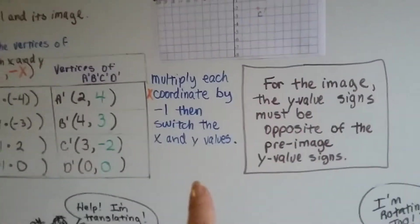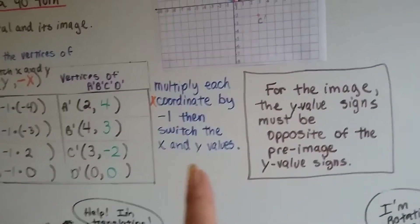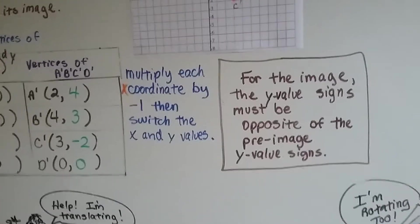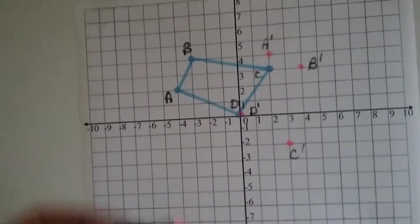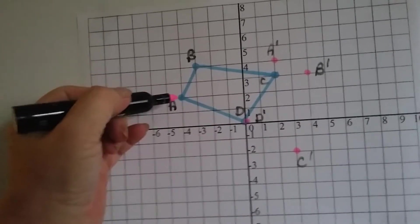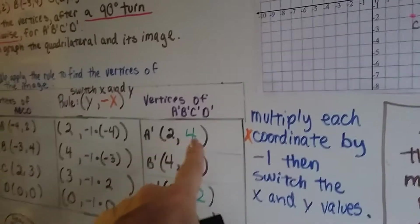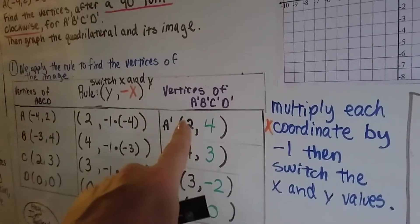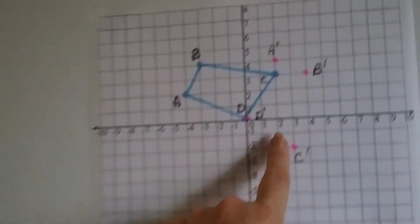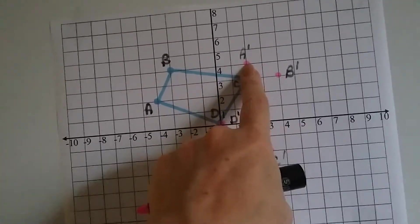For the image, the y value signs have to be opposite of the pre-image y value signs. So here was our image, and we had A here, and now A has become 2, 4. Instead of negative 4, positive 2, now it's 2, 4. So here it's at the 2 and the 4. There's our A prime.